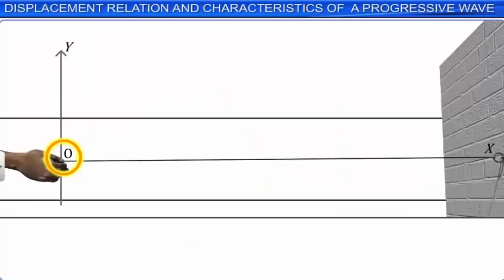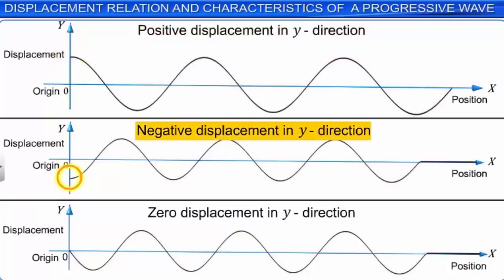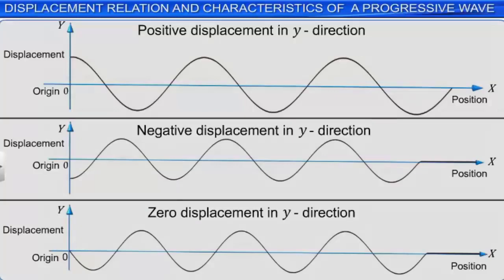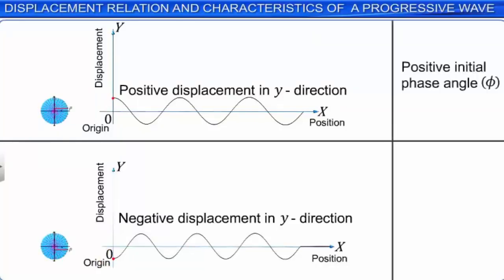Initially, that is at x = 0 and t = 0, the particle may have positive, negative, or zero displacement in the y direction. When the particle has positive or negative displacement, we say it has a positive or negative initial phase angle phi, corresponding to the position on the harmonic circle.